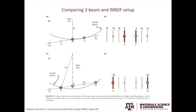This is a very nice figure from the textbook to compare the two-beam condition to the weak beam dark field condition. You should be very familiar with the setup of the two-beam condition now. The Ewald sphere will cut through the center of the direct beam and the center of 1G. In the ideal case, there is no excitation error in 1G, and it is a strong beam condition if you use 1G to form the image.